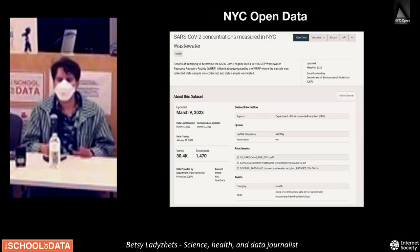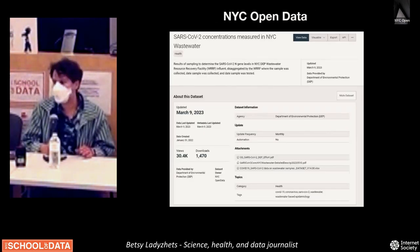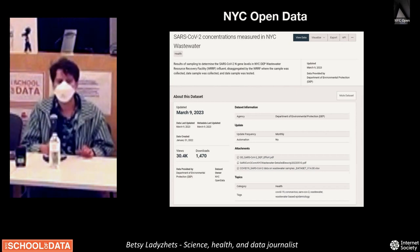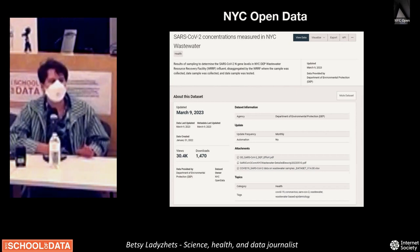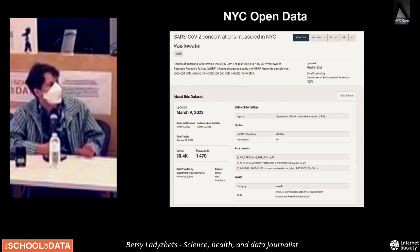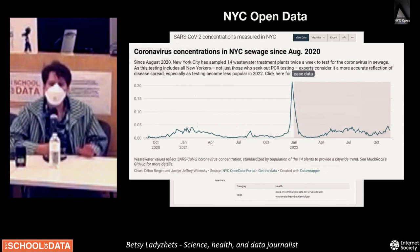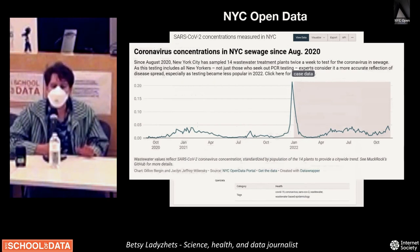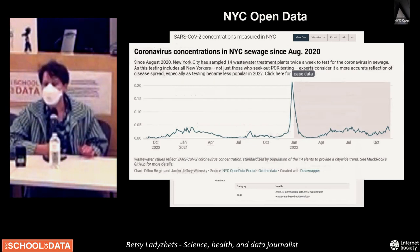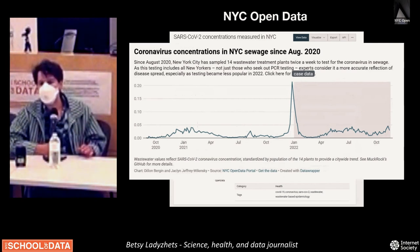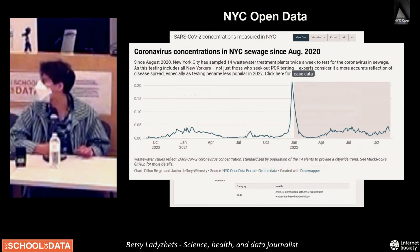Where do you find this data? It's posted online at the New York City Open Data Portal. Just to give a basic example of what you can do with it — this is a chart from a story I worked on published in December at Muckrock and Gothamist, showing COVID levels in New York City.